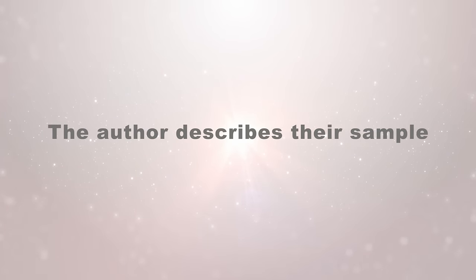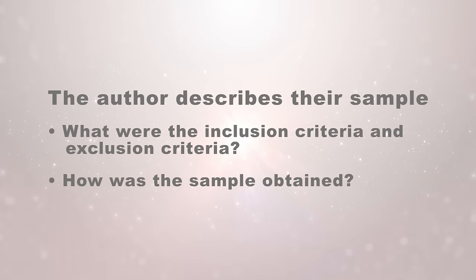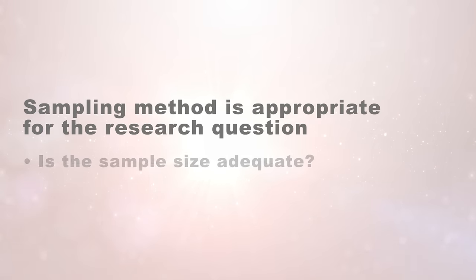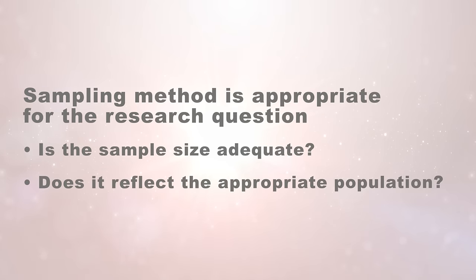Next in the methods section, you want the author to describe their sample. What was the inclusion criteria? The exclusion criteria? How was the sample obtained? As a reviewer, you need to make sure that the sampling method is appropriate for the research question. Is the sample size adequate? Does it reflect the appropriate population?